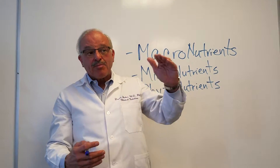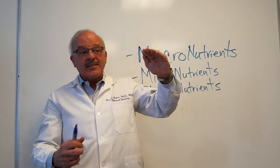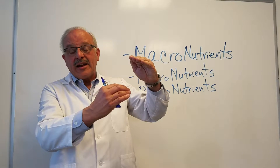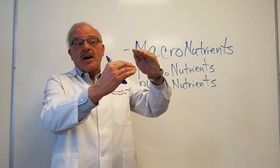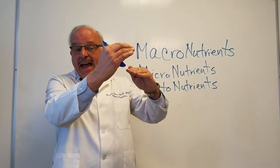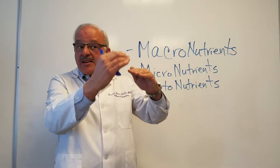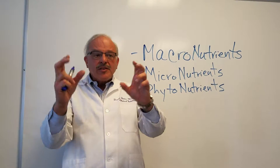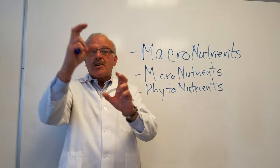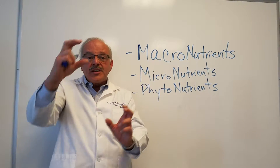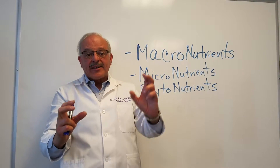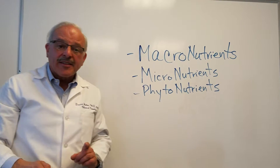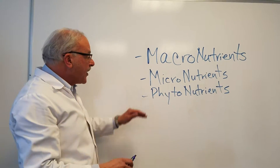A high-protein diet is often low in carbohydrate or high in fat — they can be different. So we have to think about protein, carbohydrate, and fat as three different interacting substances. We'll talk more about that in the next lecture.